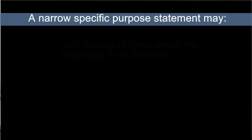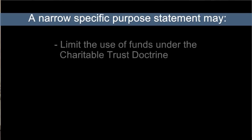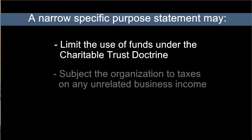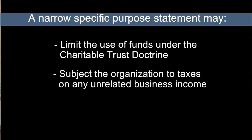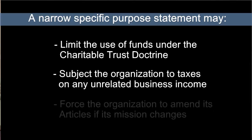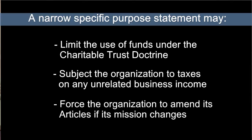Specifically, a more narrow statement, such as a location in which the organization will operate or a narrowly defined group it will serve, may limit the nonprofit's use of any funds it receives to those narrow purposes under the charitable trust doctrine, and it may also potentially subject the organization to taxes on any unrelated business income. The nonprofit may also be forced to amend its articles or other organizing document if its mission changes over time.